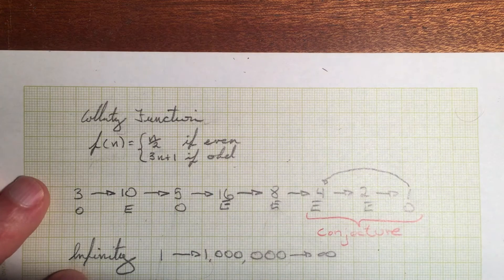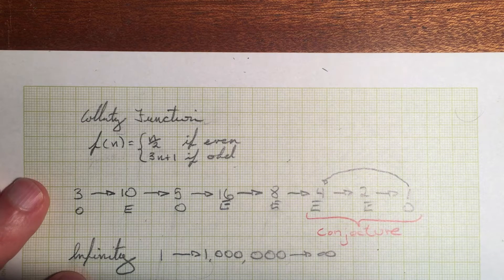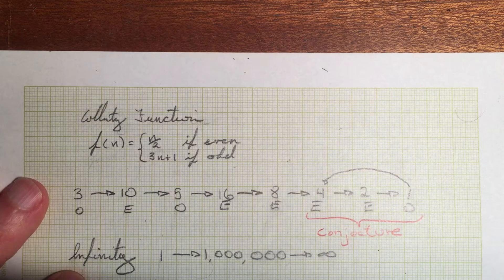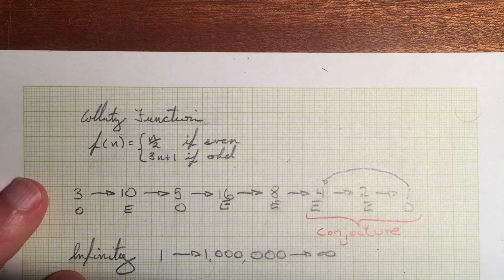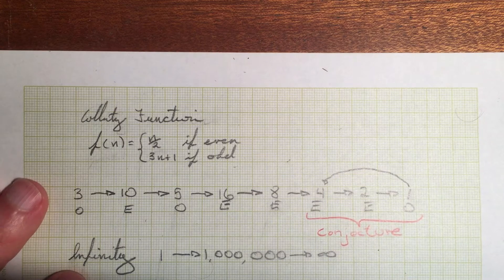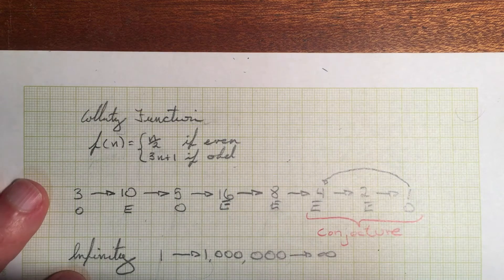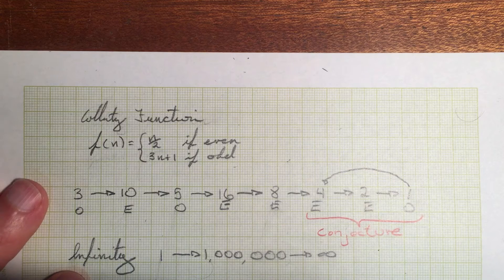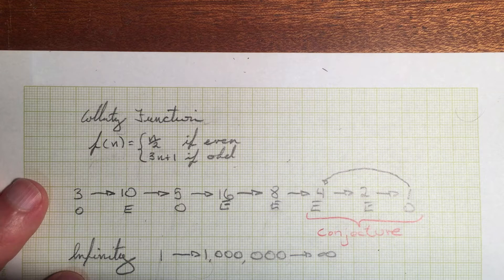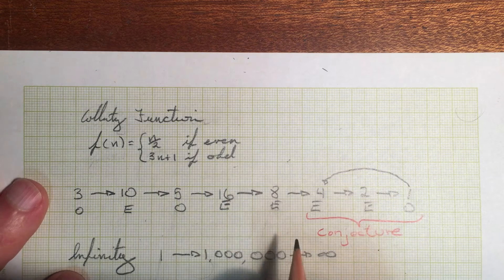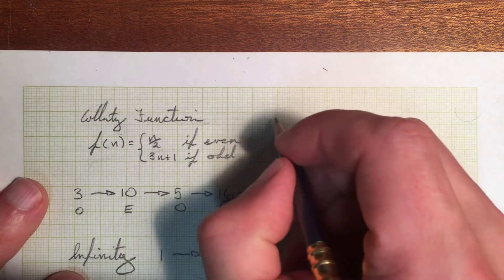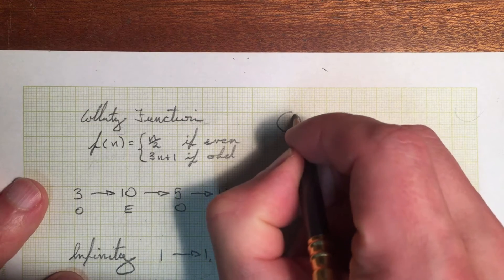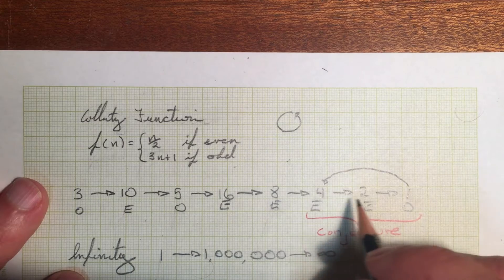Now, Alex Kontorovich states in the Veritasium video that his hunch is that actually the conjecture is false. There's some number somewhere that either blows up to some huge value, or there's a number that is a cycle, like it keeps going. So it loops around on itself, it eats its own tail, like this four to one example.